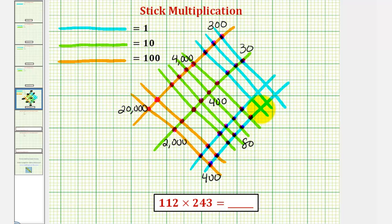And then finally, each intersection point of two blues represent 1 times 1, or 1. So we have 1, 2, 3, 4, 5, 6.